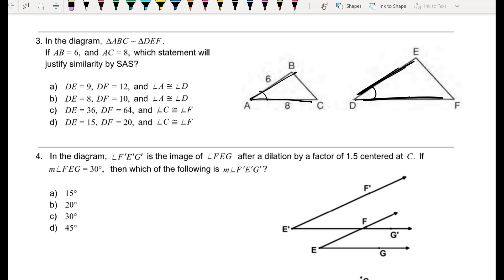So I can already rule out answer choice C and D, because those are telling me that I would need to know that angle C is congruent to angle F. However, that would not be side-angle-side. That would be more of a side-side-angle argument, which doesn't work to prove similarity. So I'm going to check the proportions here.